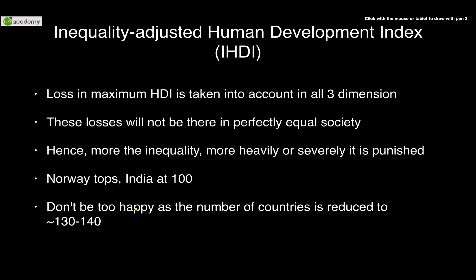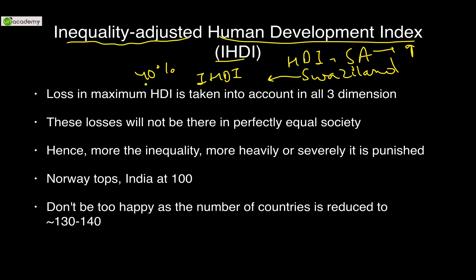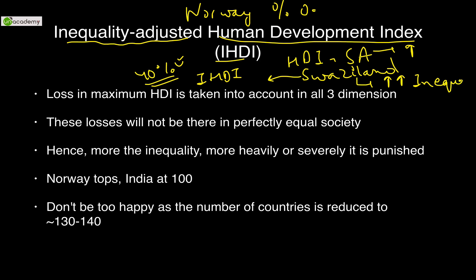Moving on to the Inequality Adjusted Human Development Index (IHDI). In countries like Saudi Arabia, Swaziland, Lesotho, and Central African Republic, when you compare HDI with IHDI, the value loses up to 40% — reflecting extremely high inequality. In Norway, the loss is only a small fraction of a percentage point, showing very low inequality. This starkly contrasts the situation: already poor countries also suffer from very high levels of inequality, which is clearly revealed by IHDI.